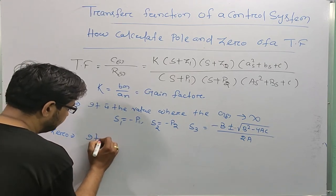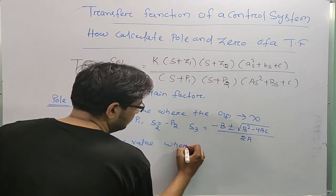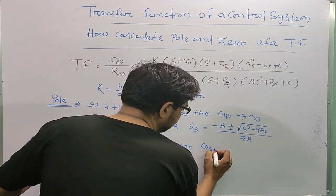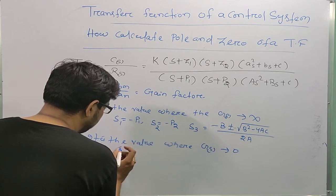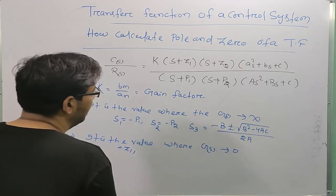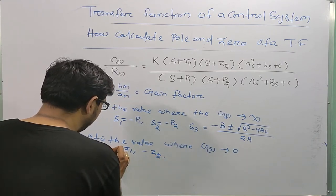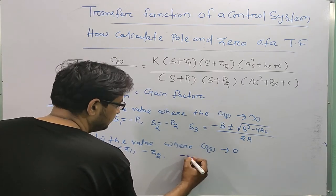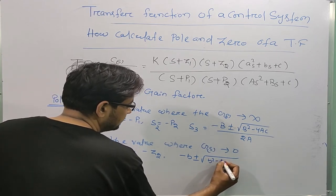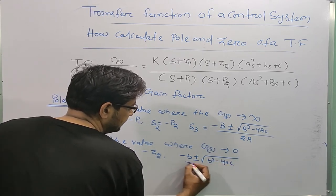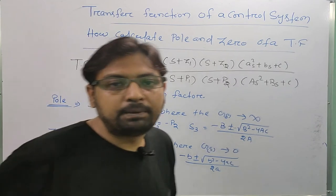Zeros are the values where G(s) tends to zero. The zeros are at -z1, -z2, and z3 = (-b ± √(b²-4ac)) / 2a. This is the definition of poles and zeros of a transfer function.